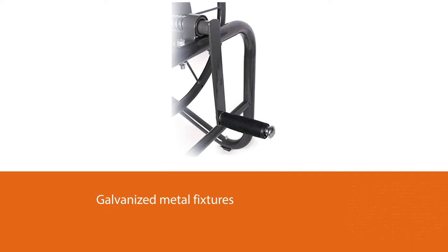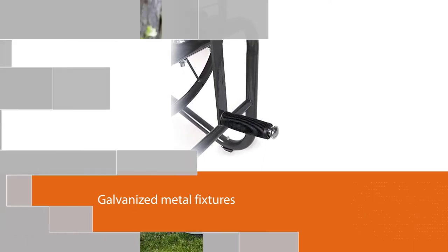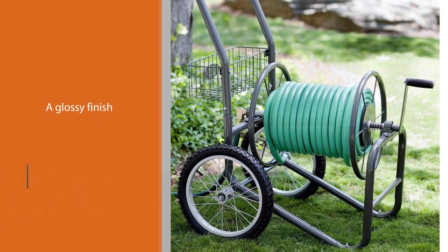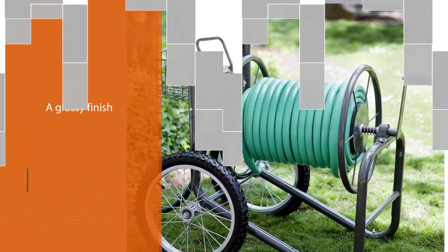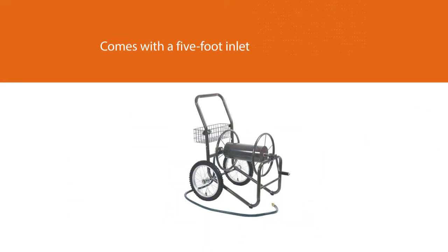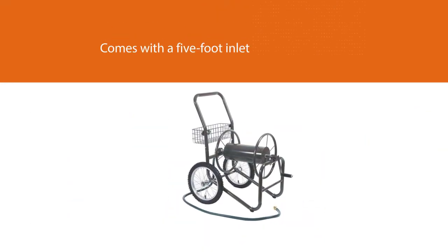We like that it comes with a five foot inlet hose and features a low center of gravity to prevent tipping. This dual wheel cart can hold up to 300 feet of standard width hose, making it a perfect choice for landscapers and anyone with a big lawn or garden.